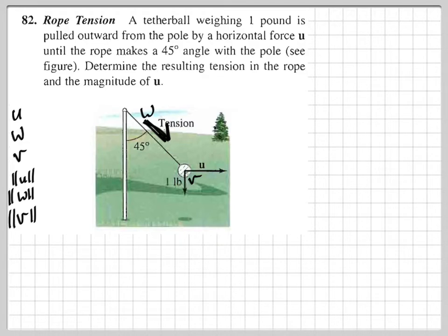The magnitude of U would be the horizontal force that the ball is being pulled outward. The magnitude of W, that would be the tension, which is also the force. The tension, the force being put on the rope would be the tension of the rope. And then finally the magnitude of V, that would be gravity, one pound.